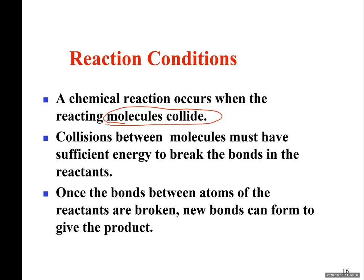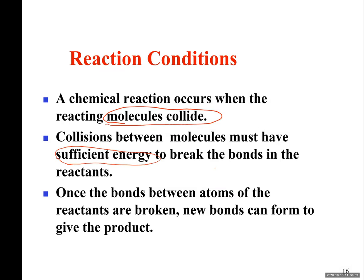If I can increase the number of collisions per second, that means I can increase the amount of product formation in one second, so the rate can be increased. But going back to the example of marriage — do you marry the first person that you date? No, you continue dating until you find the right person. Not all collisions in a chemical reaction result in product formation. Collisions must have a minimum amount of energy — they must have sufficient energy to be converted to product. Otherwise there are many non-productive collisions. This sufficient energy needed for a collision to be successful is the same as activation energy.